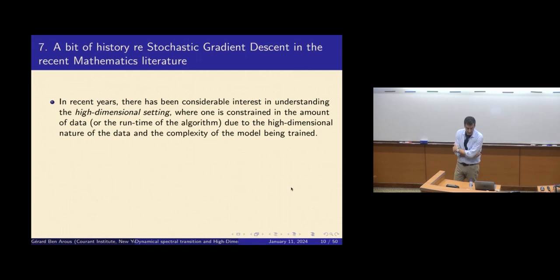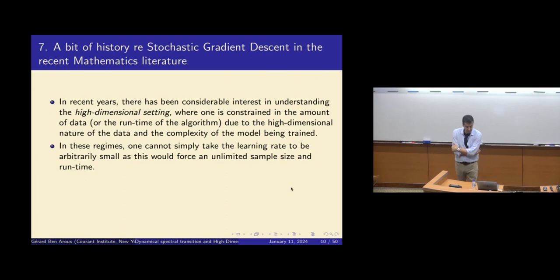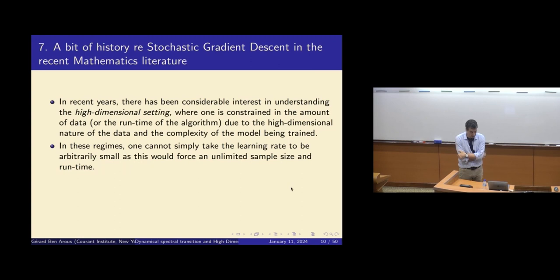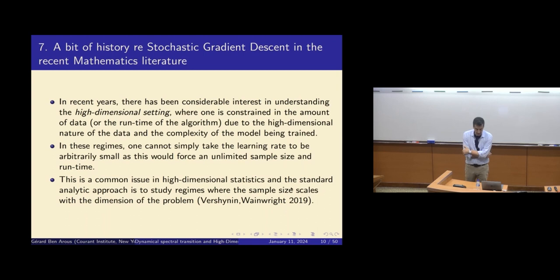Now we're trying to understand what's happening in the high-dimensional setting where the amount of data is constrained — D and P are large, but M is not too large. The high-dimensional nature of the data may be coupled with the high-dimensional nature of the parameter space and the complexity of the model being trained. In this regime, you cannot simply take the learning rate to be arbitrarily small because you have a very limited sample size, so the choice of learning rate is also a problem.